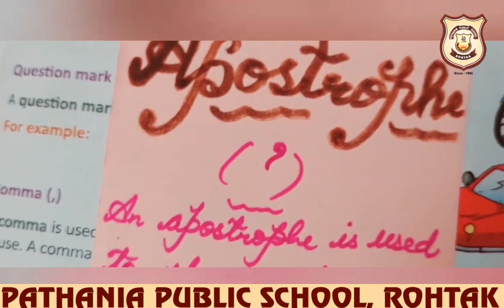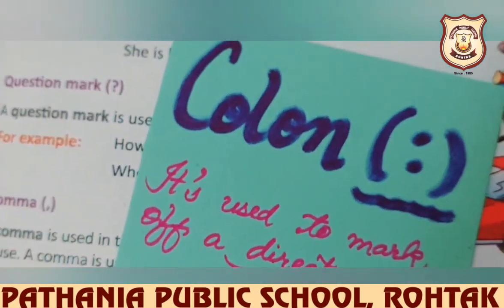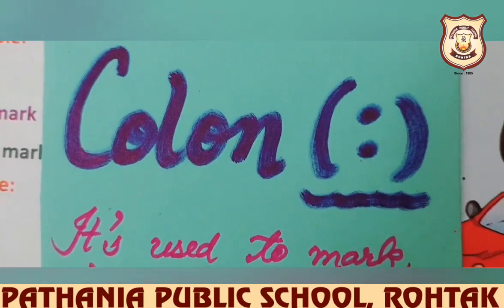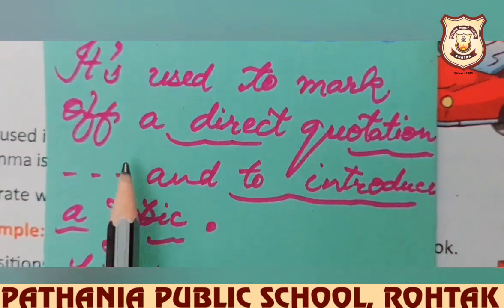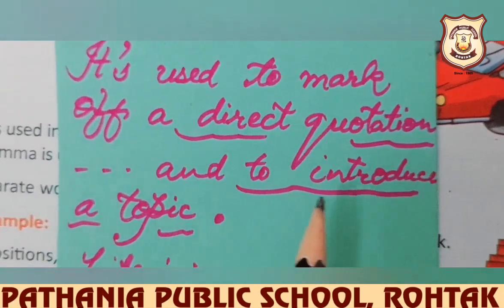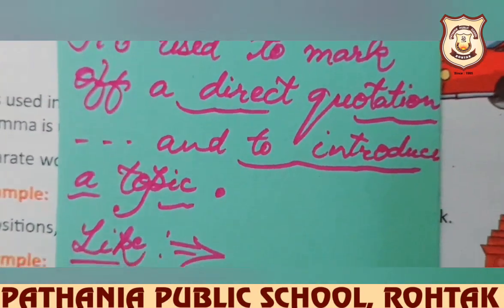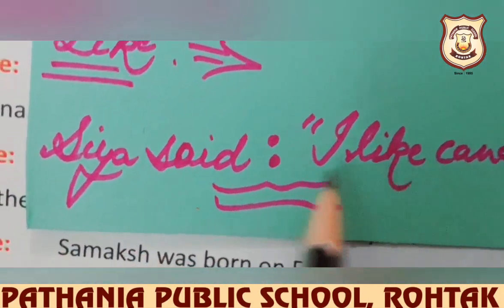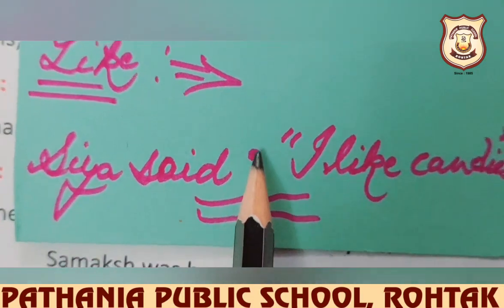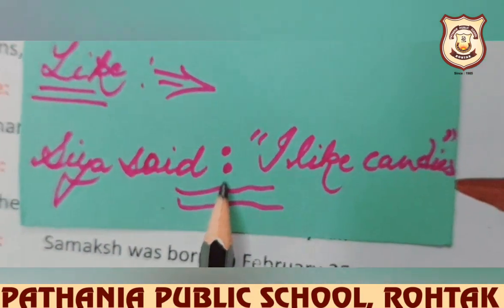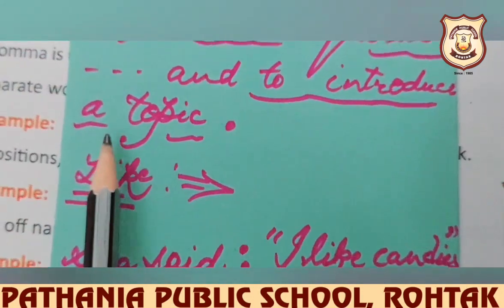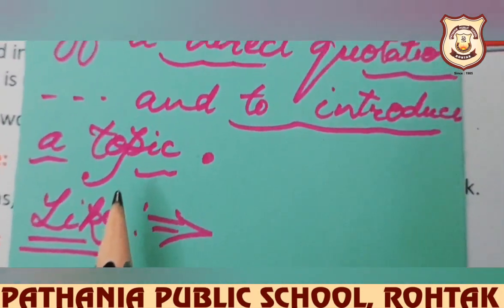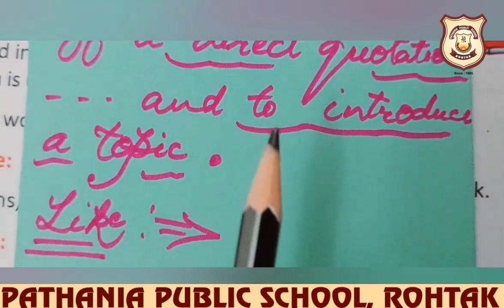Our next punctuation mark is colon. You can see the colon — two dots. It is used to mark off a direct quotation, when the exact words of the speaker are given. Before the exact words, we always use a colon. It is also used to introduce a topic — whenever we introduce any topic, we use a colon.